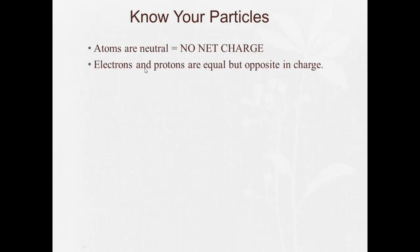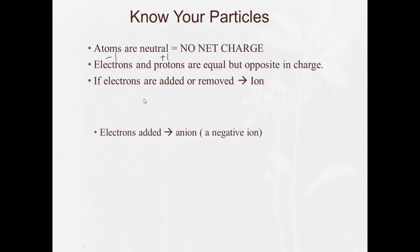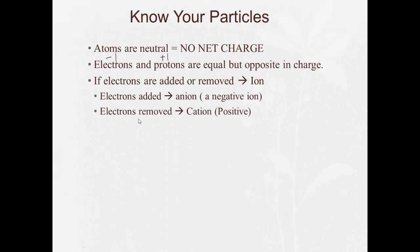Know your particles. So here's the things we have to really, really know. Atoms are neutral. No net charge. Electrons and protons are equal, but opposite in charge. Electrons have a charge of minus one. Protons have a charge of plus one. If we add or remove electrons, we get an ion. Add an electron, an anion, negative. Remove electrons, a cation, positive.